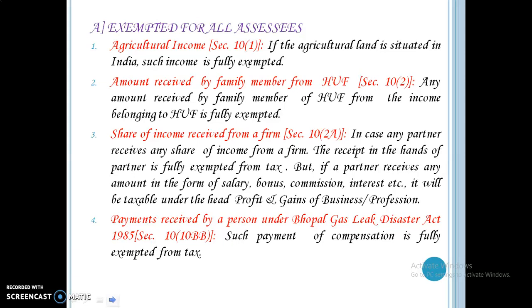But if a partner receives any amount in the form of salary, bonus, commission, interest, etc., it will be taxable under the head profit and gains of business or profession. Next, payment received by a person under the Bhopal Gas Leak Disaster Act 1985 — such payment of compensation is fully exempted from tax.